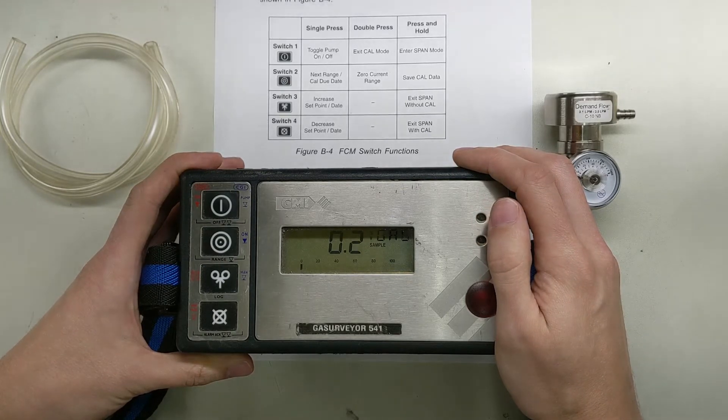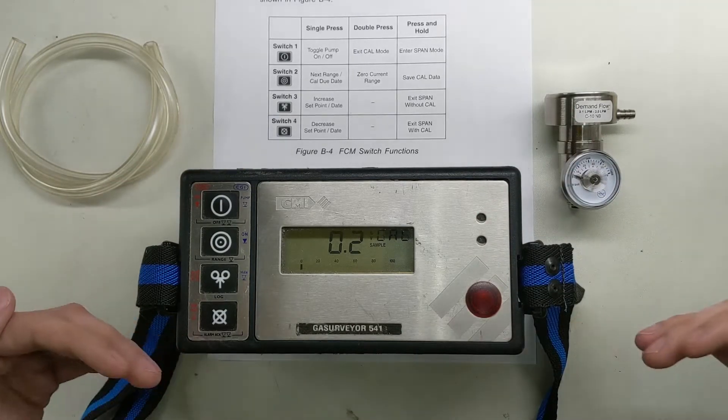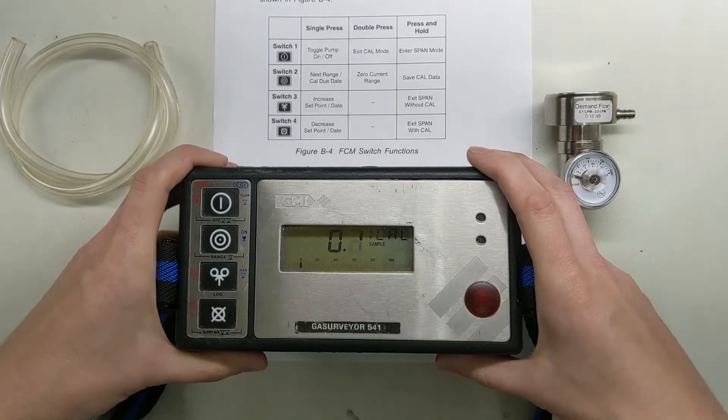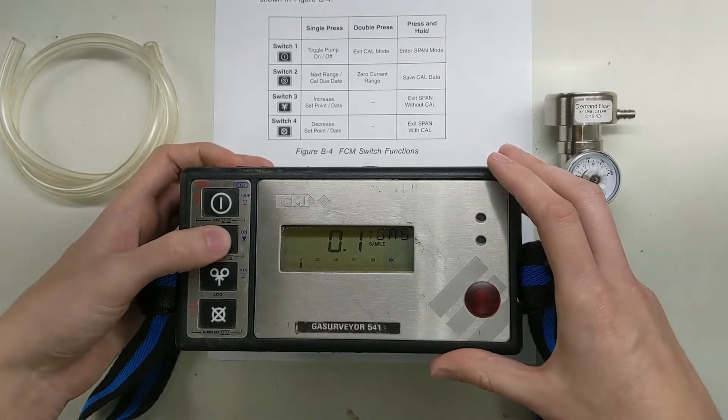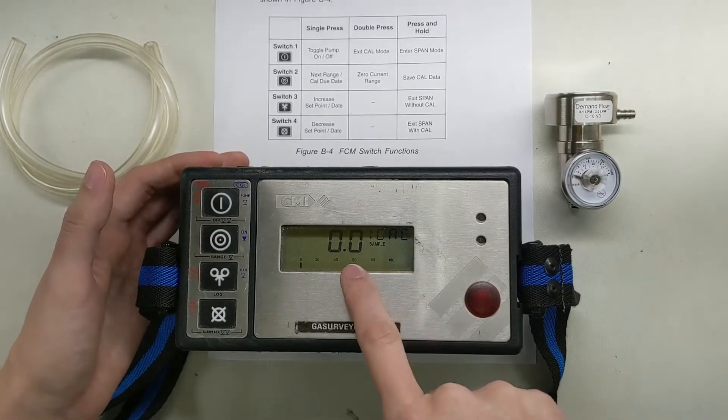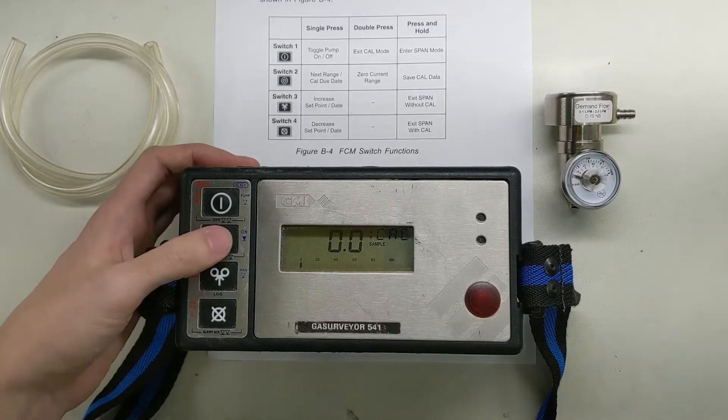Now we're going to switch to the next gas. Now we're seeing volume gas. This is our pure methane line. This is the TCD sensor on the system. We're going to double tap to zero. Drops it down to zero.